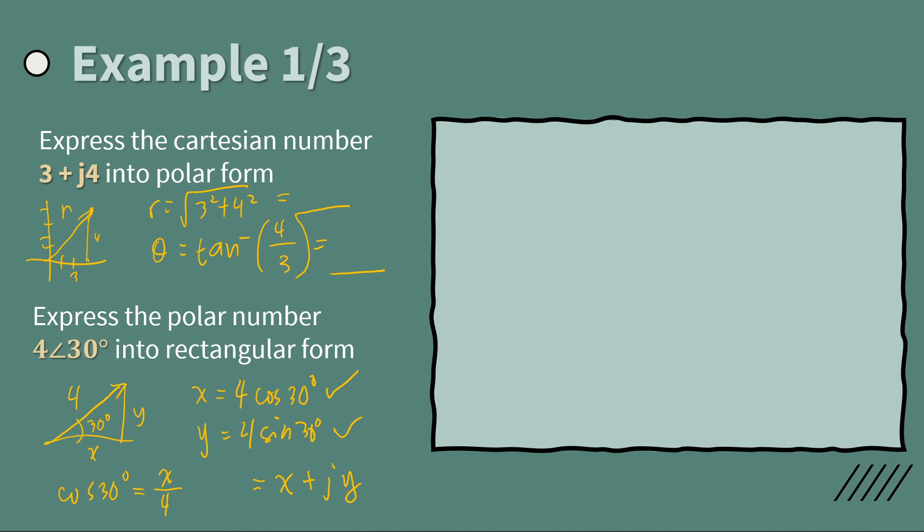So if you want to, basically this one here is 5. Then the angle here, I should use my calculator for that. So you have arctan of 4 over 3, so you have 53.13. So you have 5 angle 53.13 degrees.